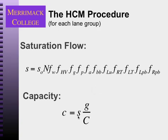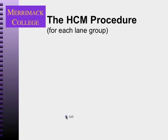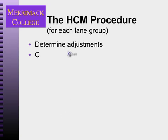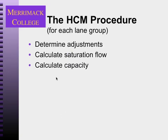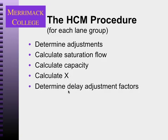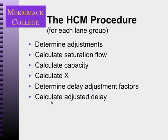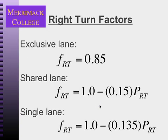The capacity is this adjusted saturation flow for my lane group times G/C. So the procedure calls for me to determine the adjustments, calculate the saturation flow, the capacity, X (which is V/C), and then we'll talk about the delay adjustment factor, and then we can calculate delay. There are right turn factors based on percent right turns in your book.